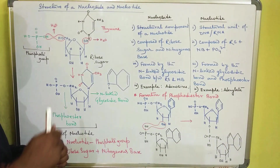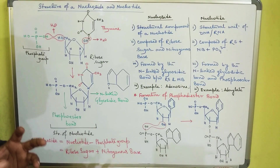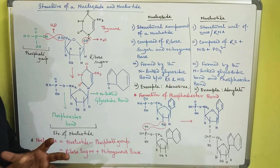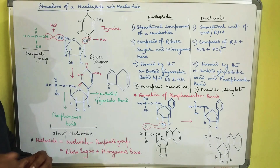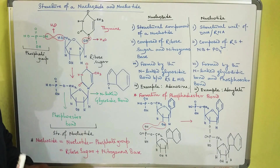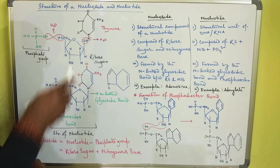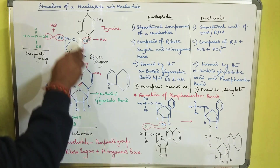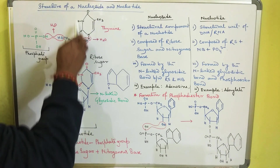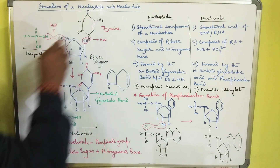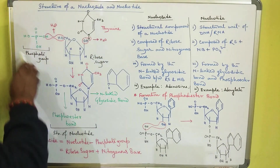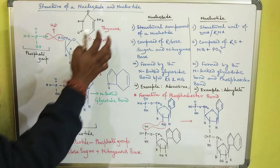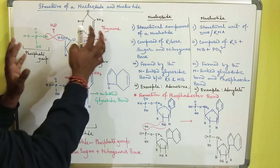As in the previous lecture we described, a nucleotide is formed of three basic components: one is the ribose sugar, another is the nitrogenous base, and the third is the phosphate group. Now let's see how they get assembled with each other to form a nucleotide.